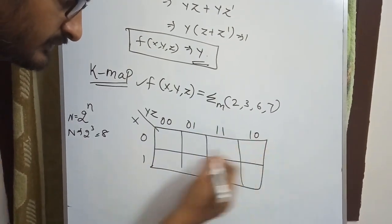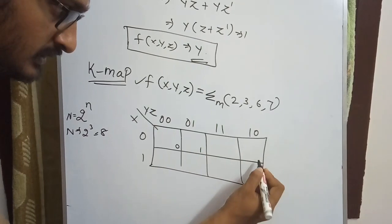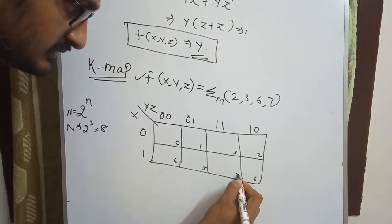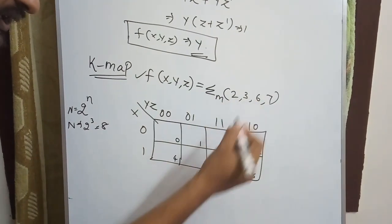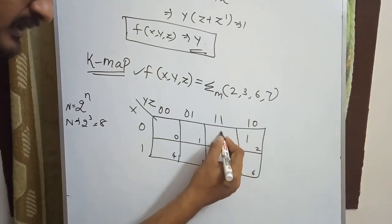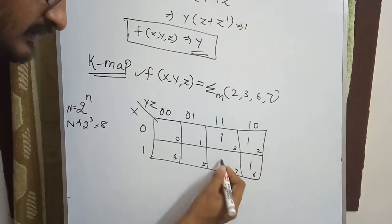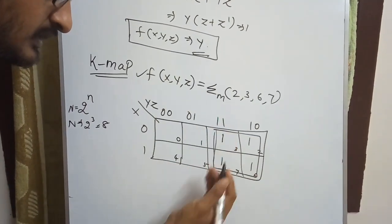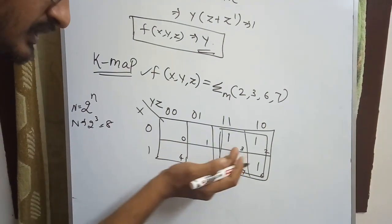For minterms 2, 3, 6, 7, we place ones. This forms a quad. On the left side, y is common in all combinations.